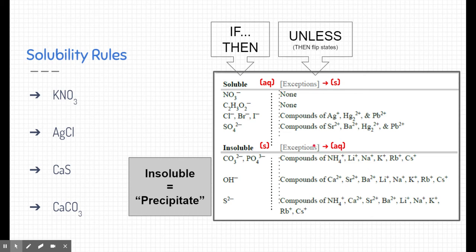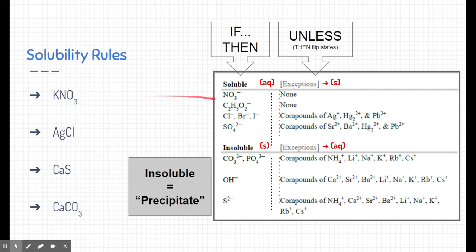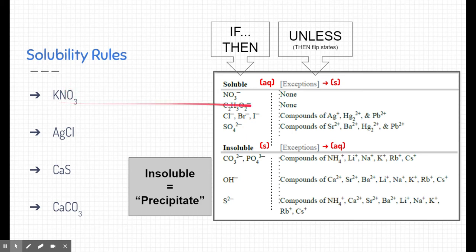Here are a few practice examples. Let's start with KNO₃. All the substances listed in the rules are negatively charged, so I look at the negatively charged piece — nitrate. I find nitrate in the rules and see this substance should be soluble. I check for exceptions and there are none. It doesn't matter what nitrate is attached to; anything attached to nitrate is always going to be soluble or aqueous.